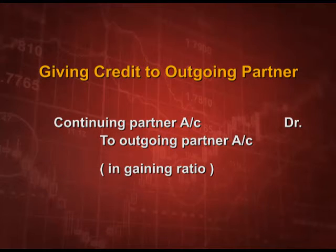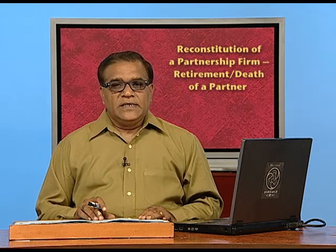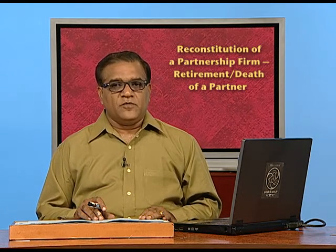Now we come to the entries. If the existing goodwill is written off, the entry will be all partners' capital accounts debit to goodwill account in old ratio, because this goodwill was shared by all the old partners, so they will write off the goodwill in old ratio. For giving credit to the outgoing partner for the share of goodwill, we will debit continuing partners' accounts and credit the retiring or deceased partner's account in gaining ratio. But sometimes it can happen that one of the continuing partners is gaining and another is sacrificing.